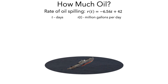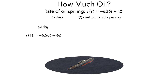For many people, the first idea is to set T equal to 1 day, and then use the R(T) formula, plugging 1 day into the formula to get 35.44 million gallons per day, and then multiply this by 1 day to get a total of 35.44 million gallons of oil. This is a fine estimate, but one thing we know is that over the course of the day, the oil spills slower and slower.